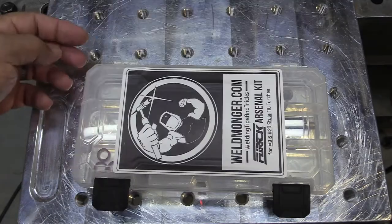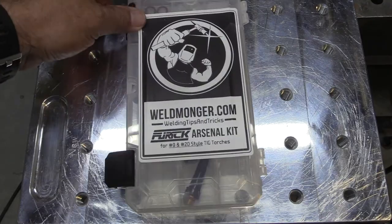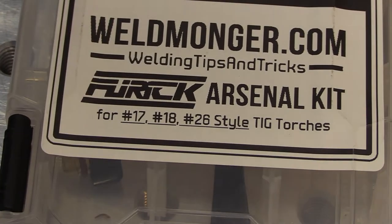This kit comes in two versions. This one was for the 9 and 20 style torch. But I've also got one for air-cooled 17 and 26 style or the big 18 water-cooled style.